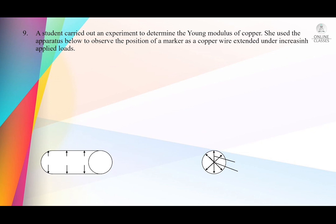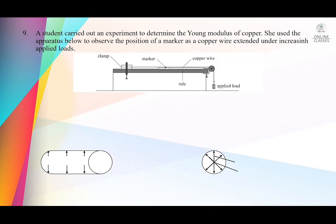Question number 9: a student carried out an experiment to determine the Young's modulus of copper. She used apparatus to observe the position of a marker as a copper wire extends under increased applied forces. The diagram shows a clamp stand, G-clamp, two blocks, wire, and a marker — a small tape — along with a copper wire, meter rule to measure length, pulley, and applied force.